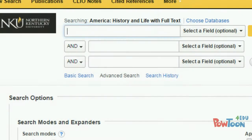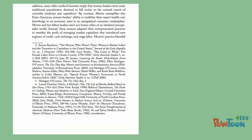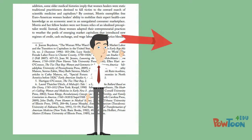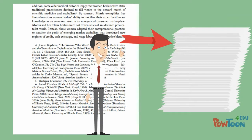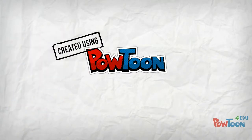In addition to using Google Scholar, Will learned that many databases also provide links to more recent articles that cite the original article. In America History and Life, for some sources, he could click on the Times Cited in the database link to find more recent articles. By looking at the references and cited references for his original article, Will was quickly able to locate several additional relevant sources for his paper.